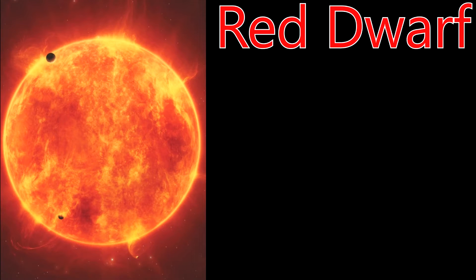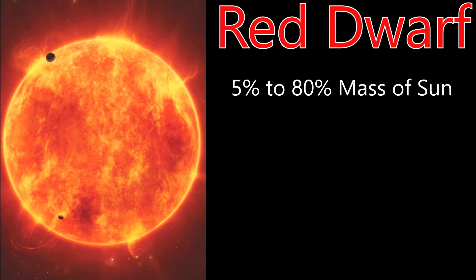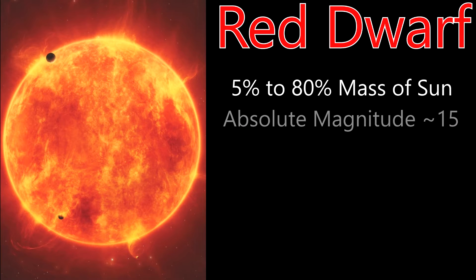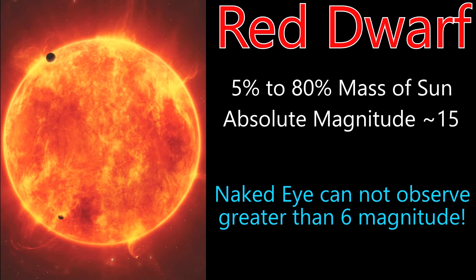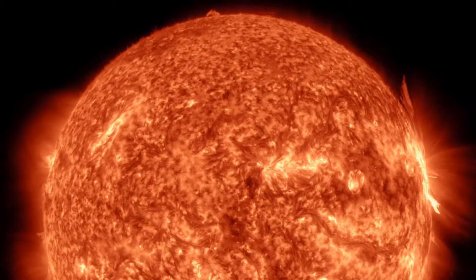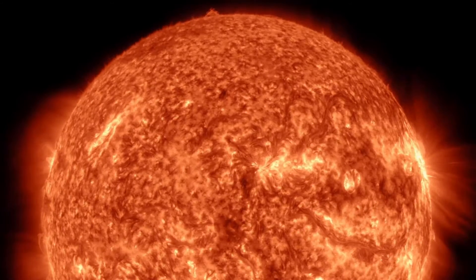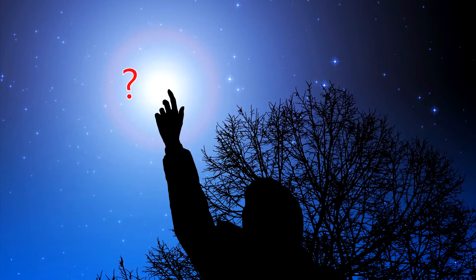Red dwarf stars are anywhere from 5 to 80 percent the mass of the Sun — that's all the way from a little bit larger than Jupiter up to nearly the mass of our home star. Their brightness is many orders of magnitude less than that of even the dimmest stars we can see with the naked eye.